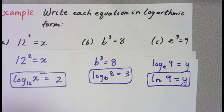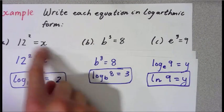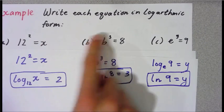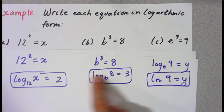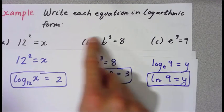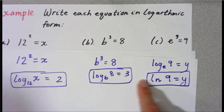That's our first example, where we have some numerical values — writing exponentials in logarithmic form. When you write an exponential in logarithmic form, you're writing its inverse.